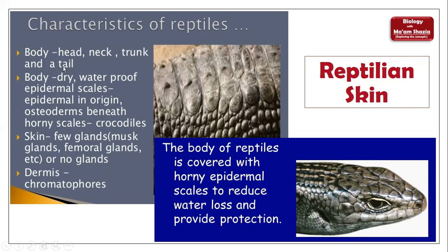The body parts of reptiles include the head, neck, trunk, and tail. The tail is a very important part — it stabilizes the body and maintains position. Few glands are present on the skin. Chromatophores are present, giving the skin different colors. I have seen very beautiful snakes in pictures recently — they were really beautiful.